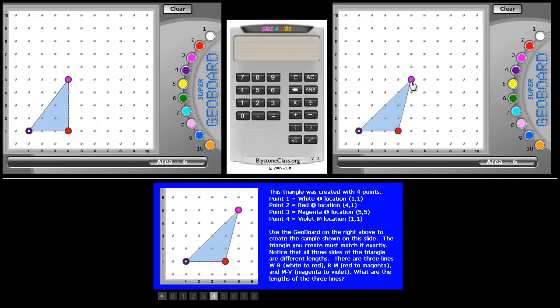Students should be allowed to manipulate the triangle and change it into a right triangle and then back to its original form. This is the point at which the student must learn that the Pythagorean theorem relies on right triangles in order to work.